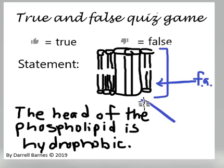This big central piece right here is an integral channel protein. Things can move in and out of your cell through this channel.